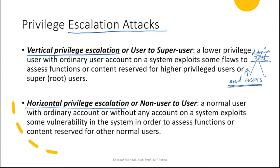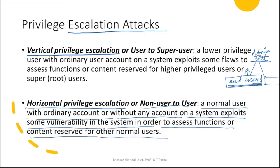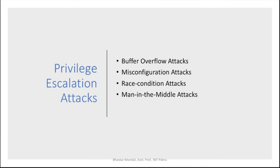Horizontal privilege escalation means moving from one user's account to another user's account at the same level — from user to user. A normal user, or someone without an account, exploits a vulnerability to access functions or content reserved for other normal users. Privilege escalation attacks happen via methods such as buffer overflow attacks, misconfiguration attacks, race condition attacks, and man-in-the-middle attacks.